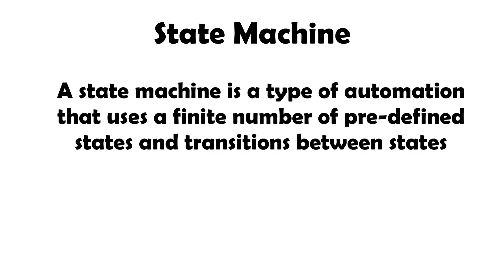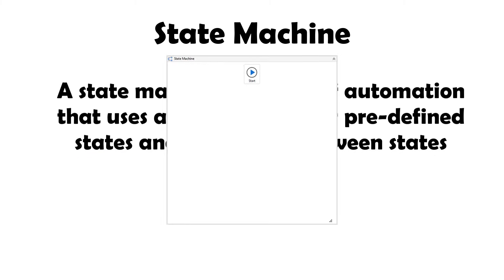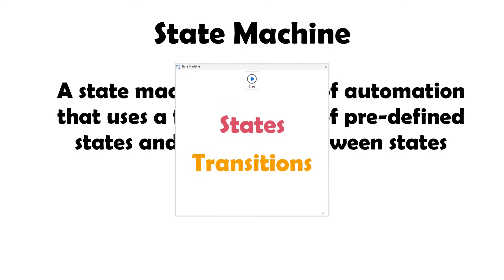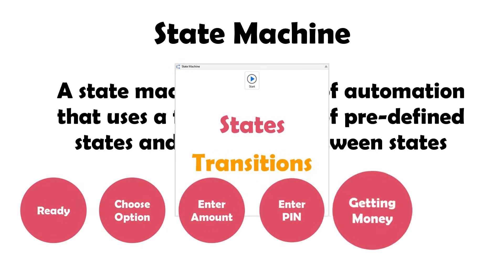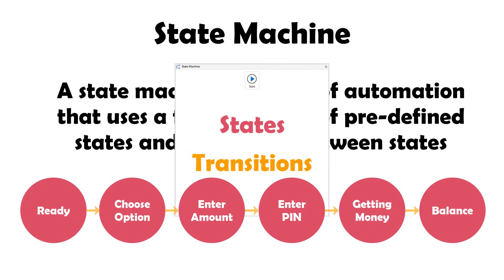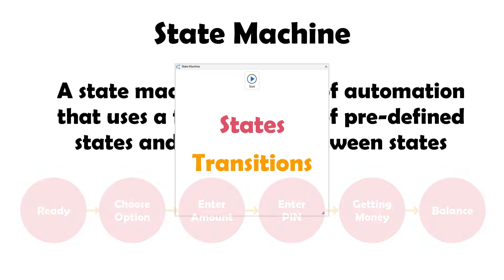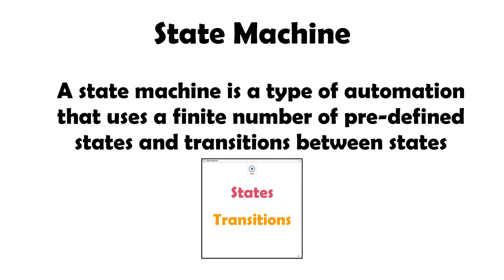A state machine is a type of automation that uses a finite number of predefined states and transitions between states. As the definition suggests, a state machine consists of two main parts: states and transitions. A state machine is a container which consists of states and transitions. The transitions are the arrows where we move from one state to the next, depending on the result of the current state. A transition is like an if statement — depending on the result, we move on to the state defined in the current state.